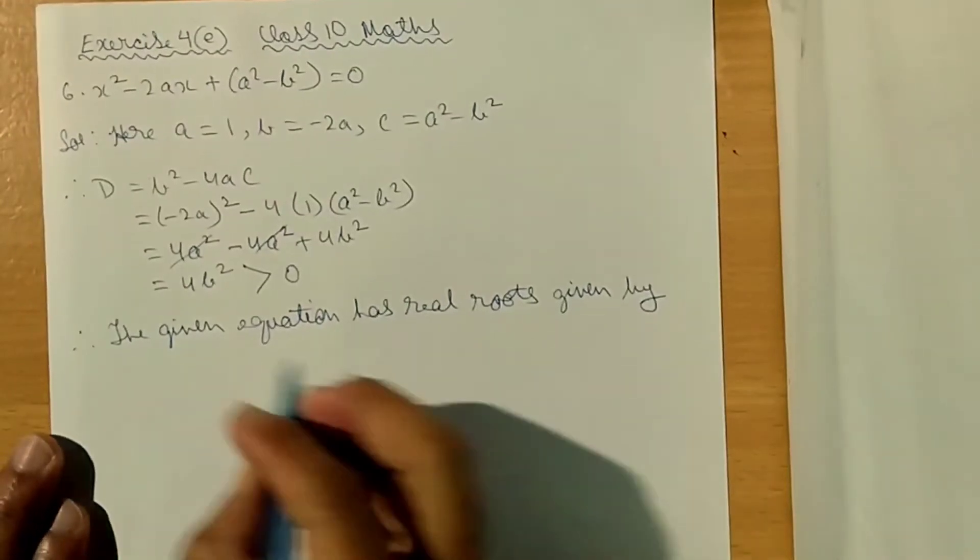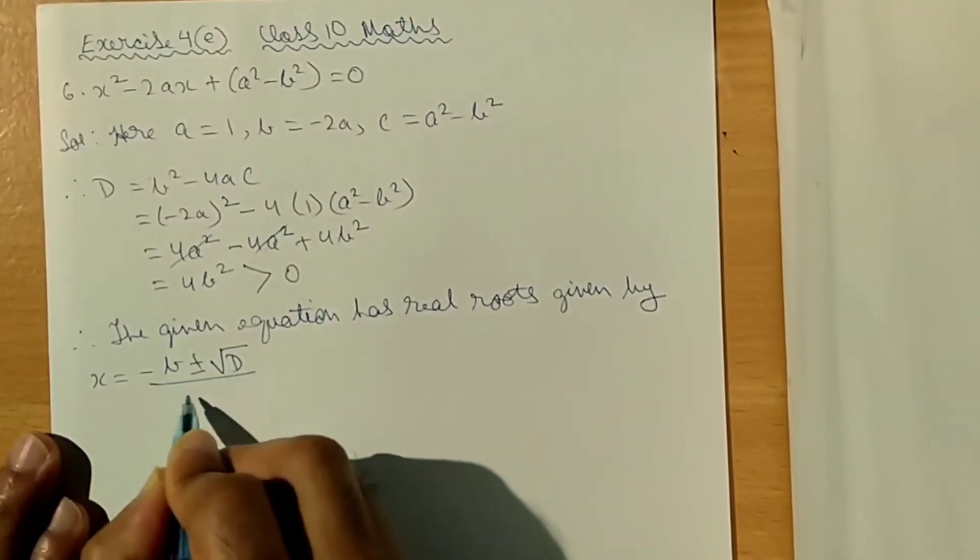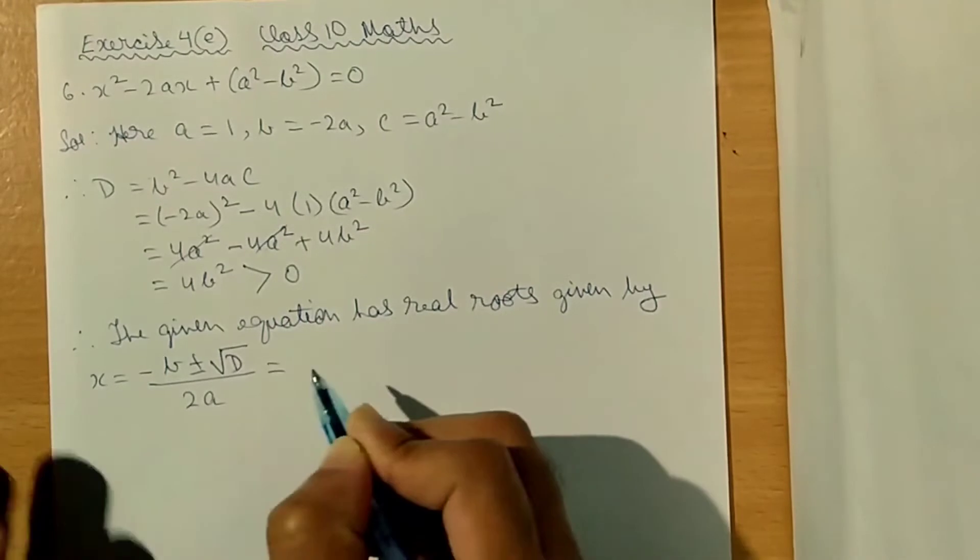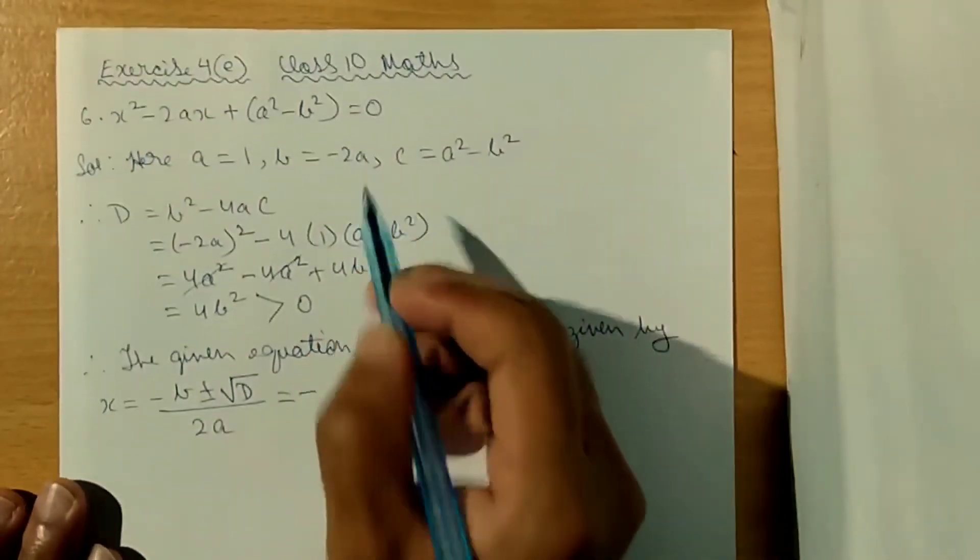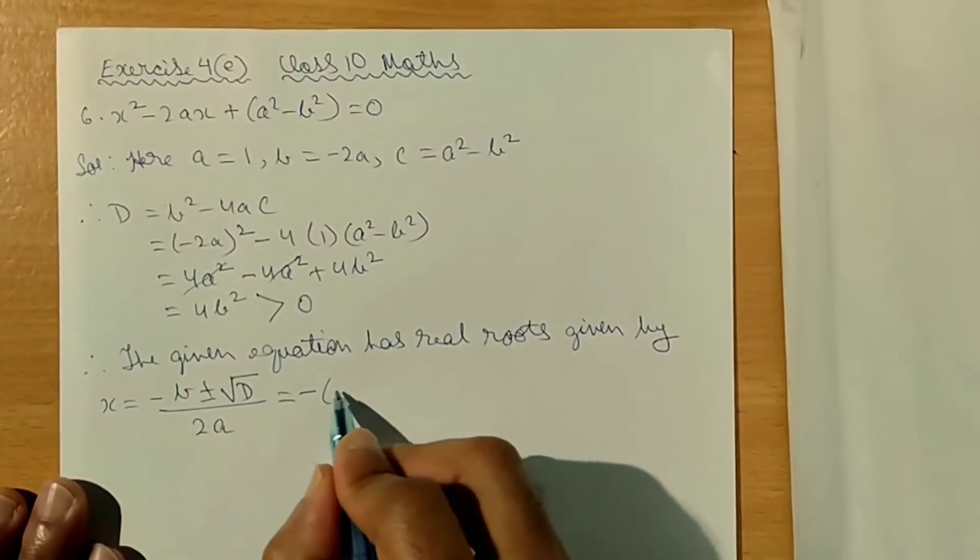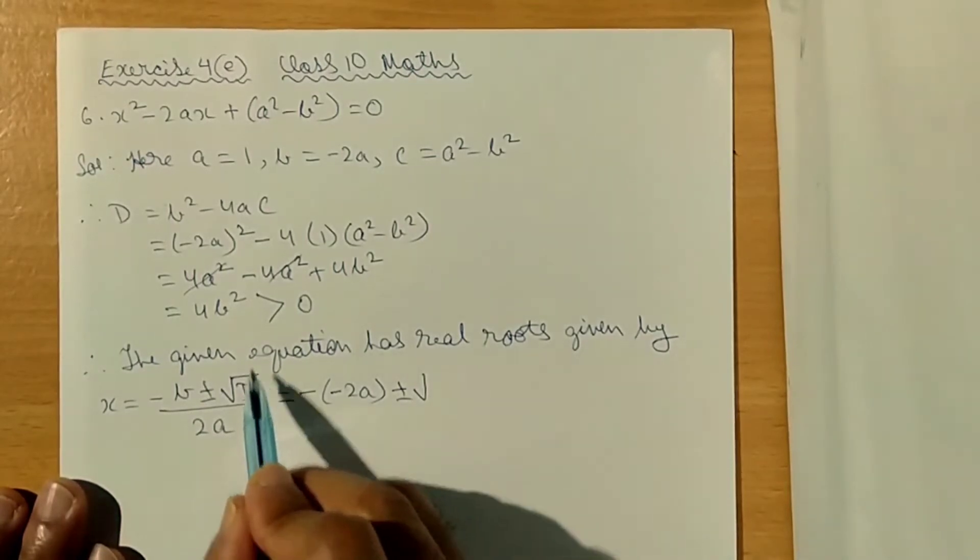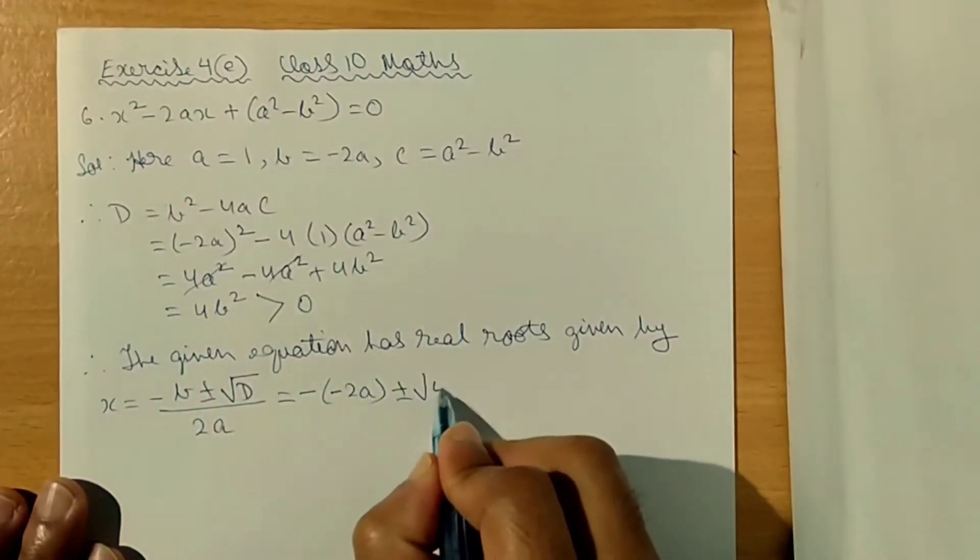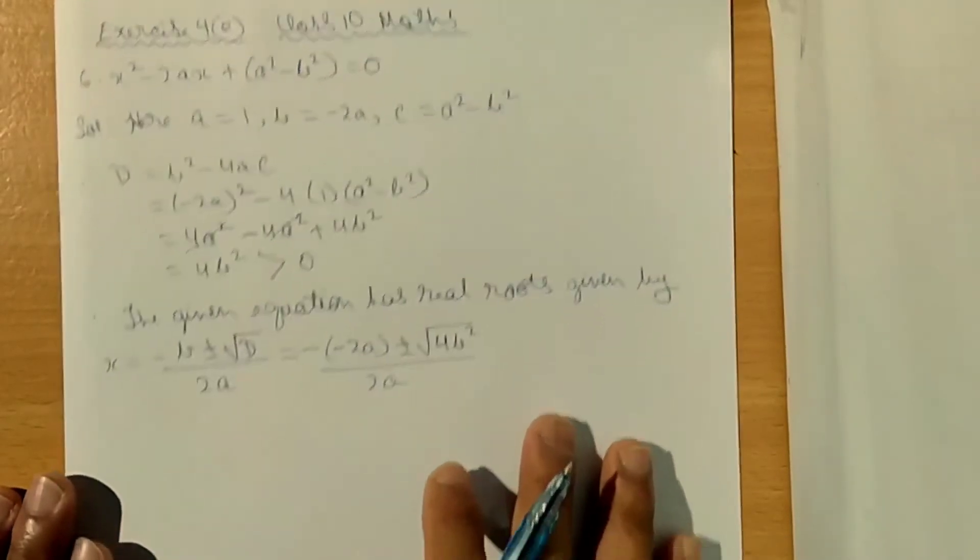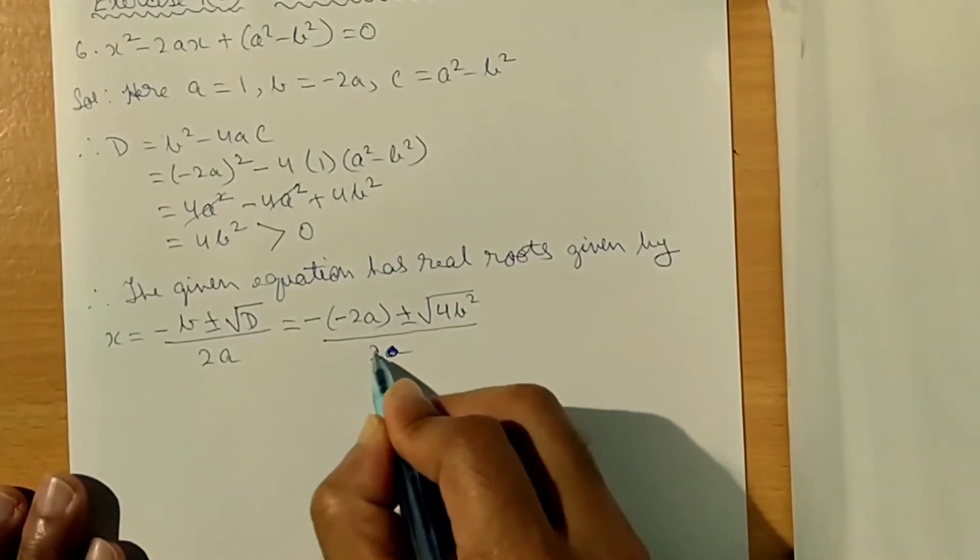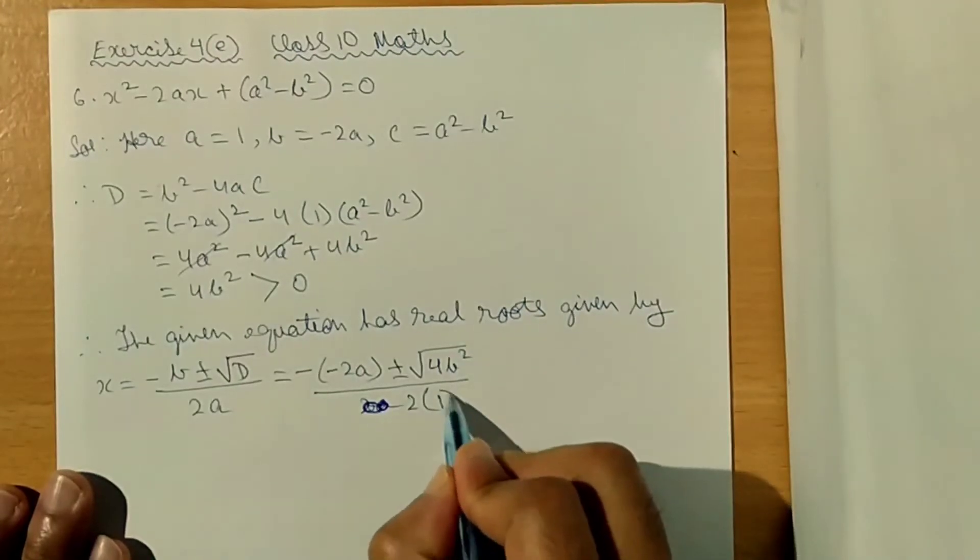Given by x is equal to minus B plus minus root D divided by 2A. This is equal to minus minus 2A plus minus root 4B squared. This is divided by 2A. Oh sorry, 2 into A, so this will be 2 into 1.